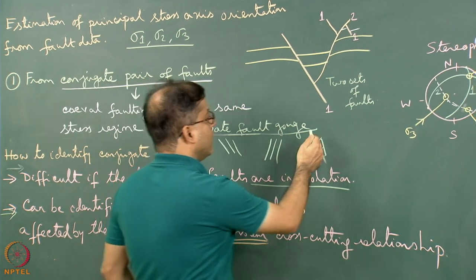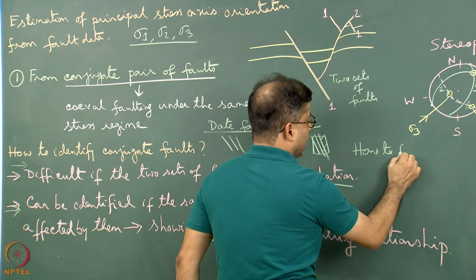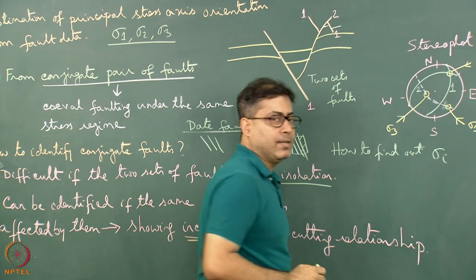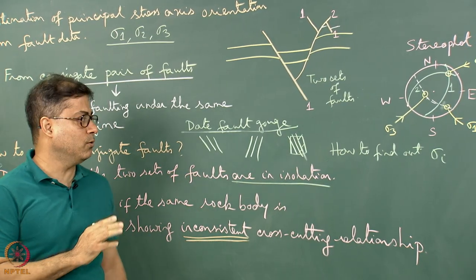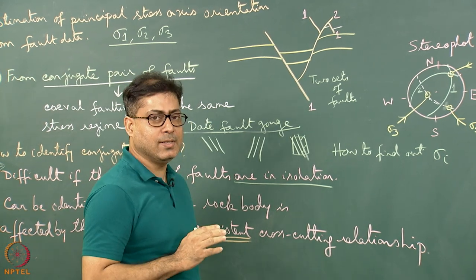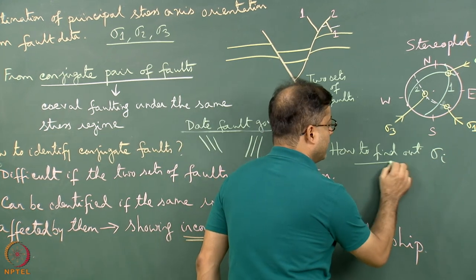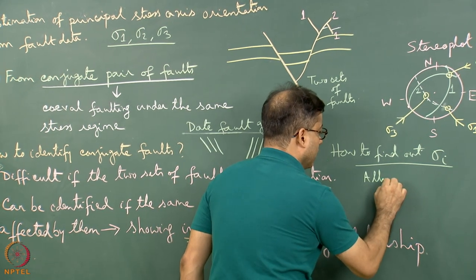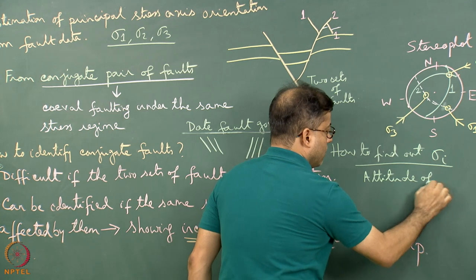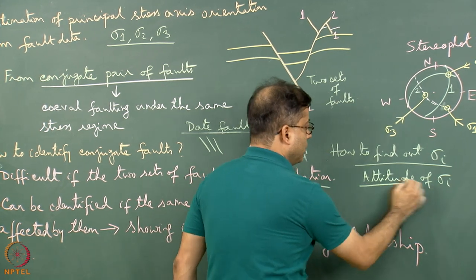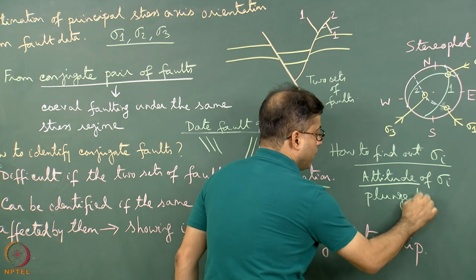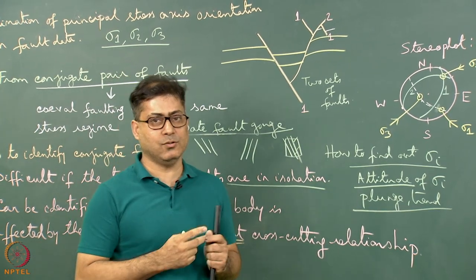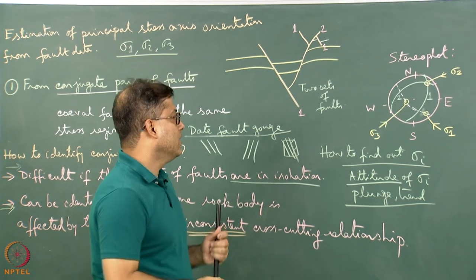Now, in this case, how do we find out sigma i — that is, sigma 1, sigma 2, and sigma 3? We are finding the principal stress axis attitudes, not their magnitudes. Attitude means the plunge and trend of sigma i, since the stress axis is a line with two components: plunge and trend.